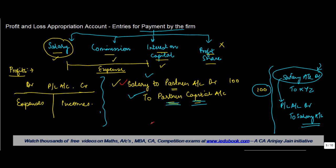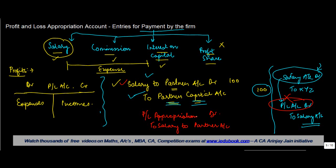Similarly, in the case of salary due to the partner, we credit this account to the 'Salary to Partner Account.' But what we debit is not the profit and loss account, but the Profit and Loss Appropriation Account.